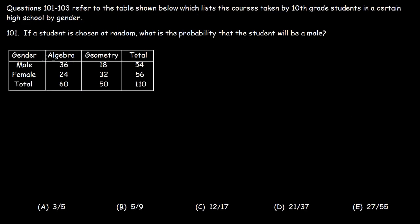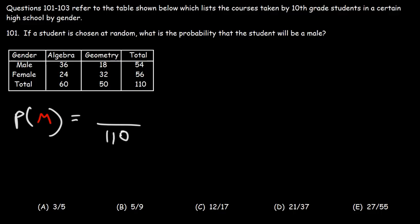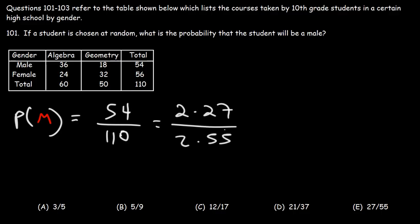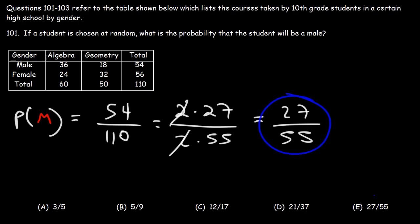Questions 101 to 103 refer to the table shown below, which lists the courses taken by 10th grade students in a certain high school by gender. If a student is chosen at random, what is the probability that the student will be a male? The total number of students in 10th grade is 110. Out of those 110 students, the total number of males is 54. So it's 54 out of 110, which simplifies to 27 over 55. So B is the right answer.